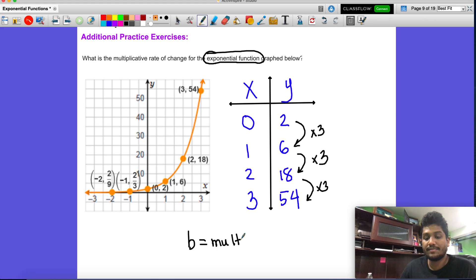Or our multiplier slash our base is another name for it, slash growth rate is another name for it. That's going to equal to 3.